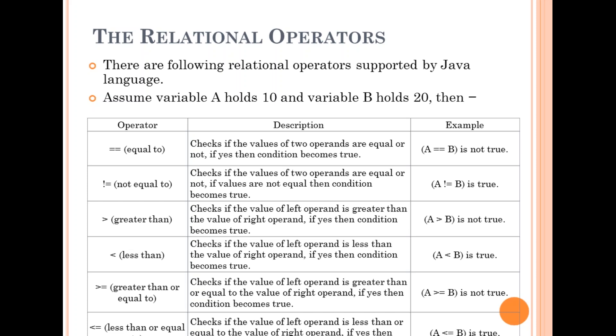Less than checks if the value of the left operand is less than the value of the right operand. If yes then the condition becomes true. A less than B, that's 10 less than 20, that's true.